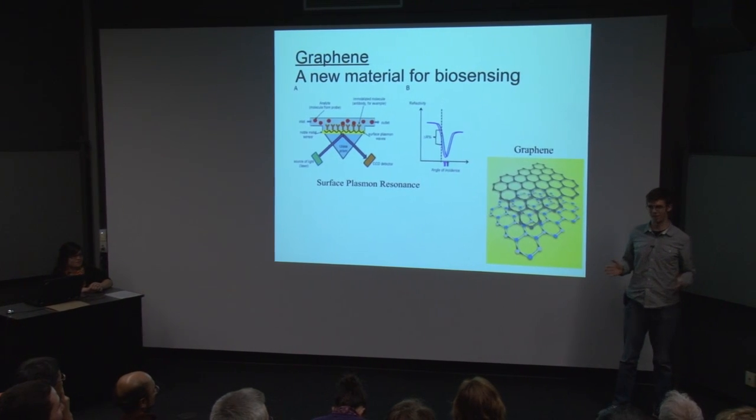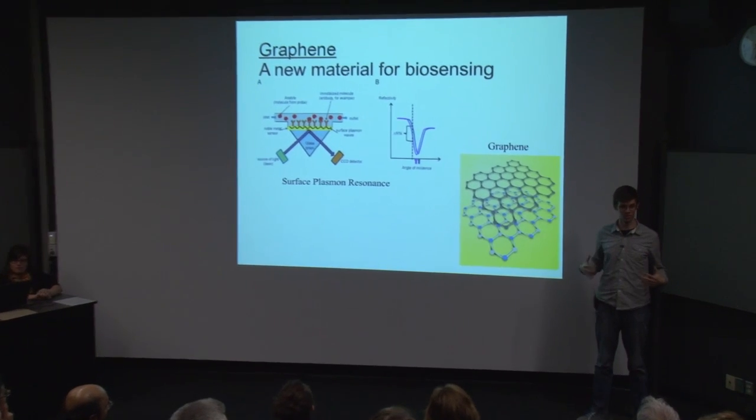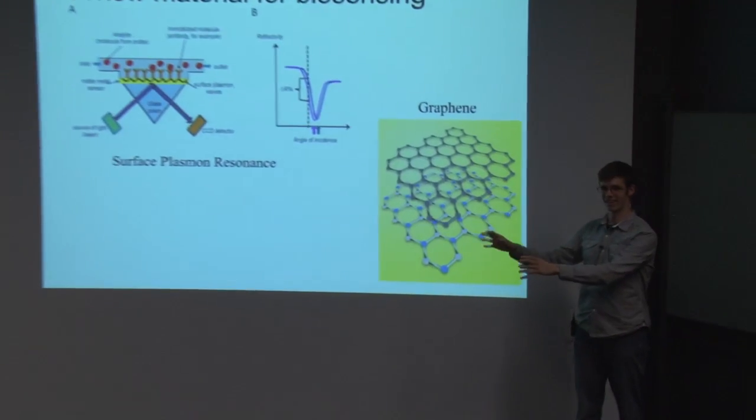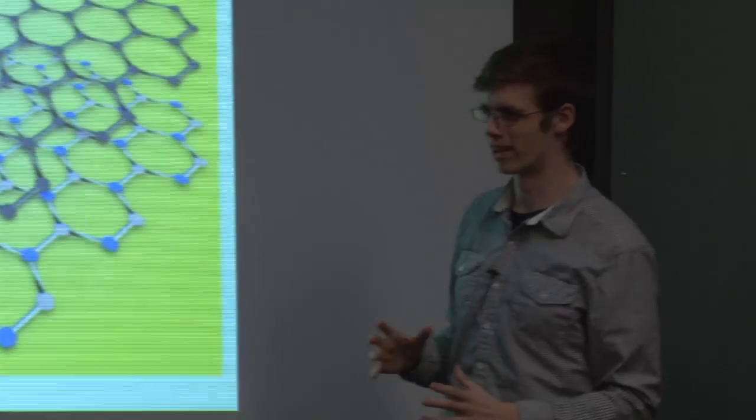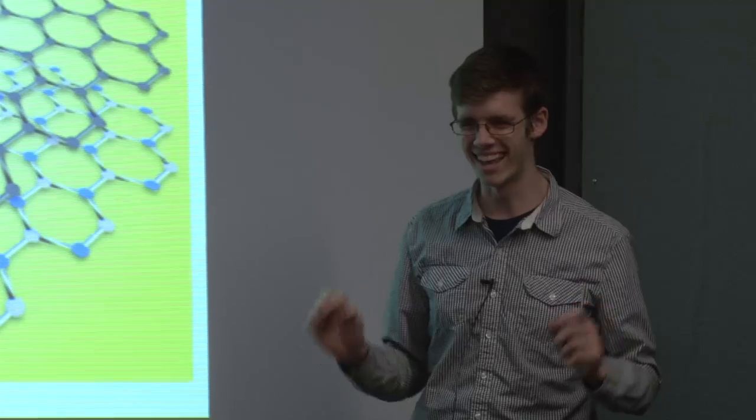So for those of you that like spy movies, imagine that James Bond is on one side of the room and on the other side is some code or something he needs to get to. And in his way is this web of lasers that will detect him at the slightest hint of a spy.